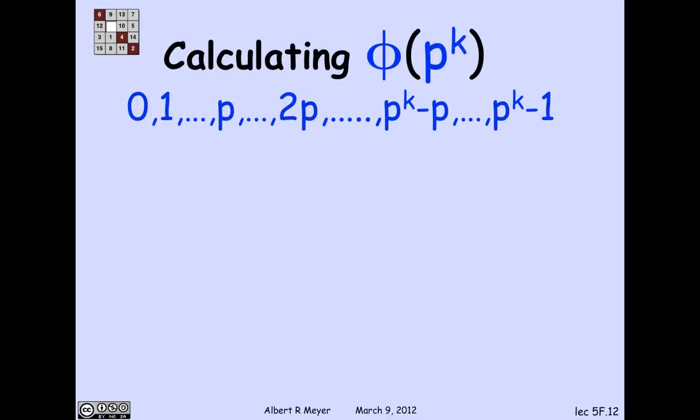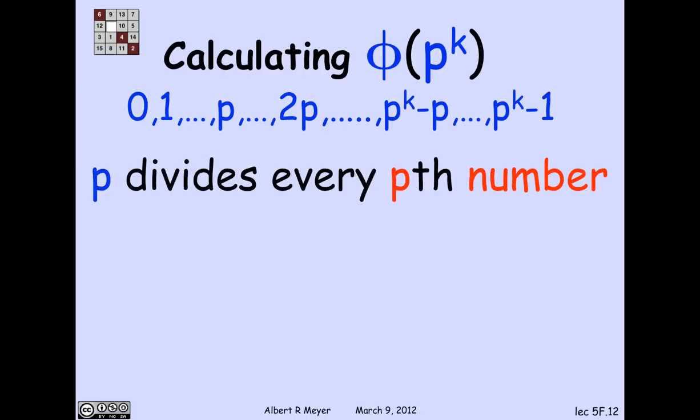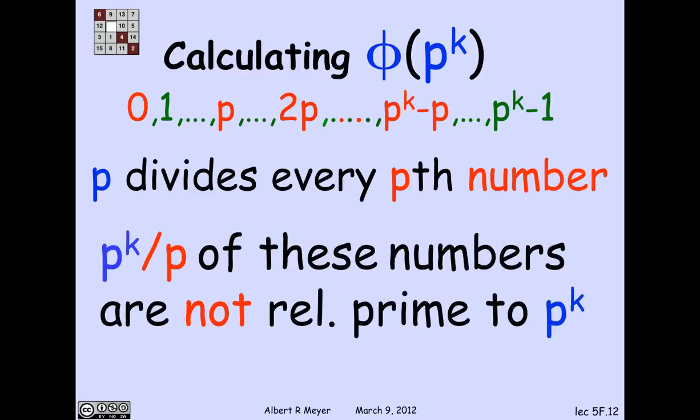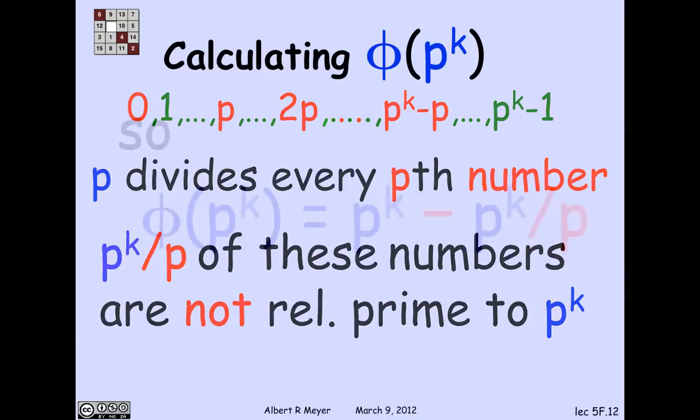This generalizes to a power of a prime. If k is a positive integer, then phi of p to the k, the reasoning is that a number is relatively prime to p to the k if and only if it's relatively prime to p. p divides every p-th number. So 1 p-th of the numbers in the interval are bad.